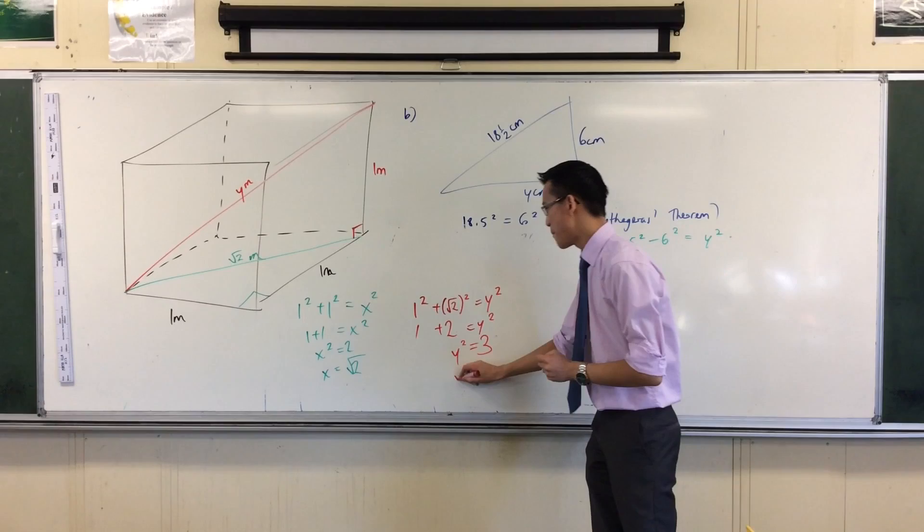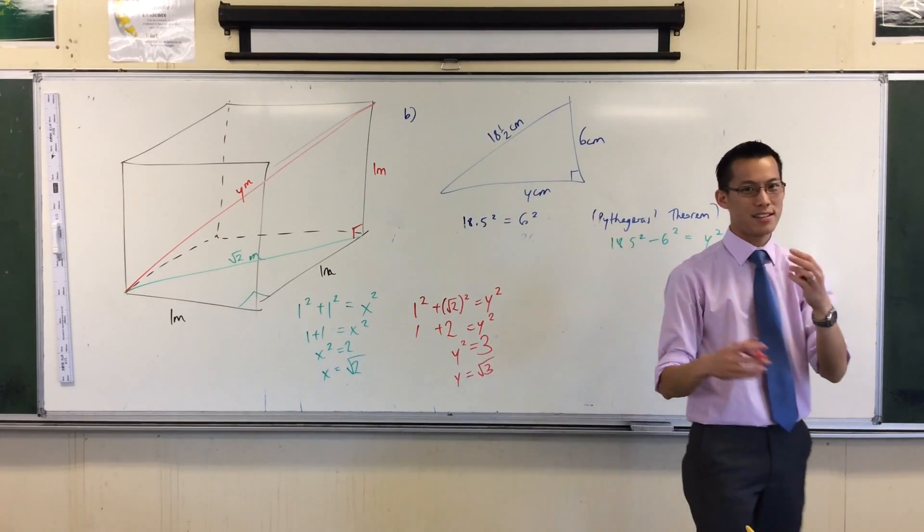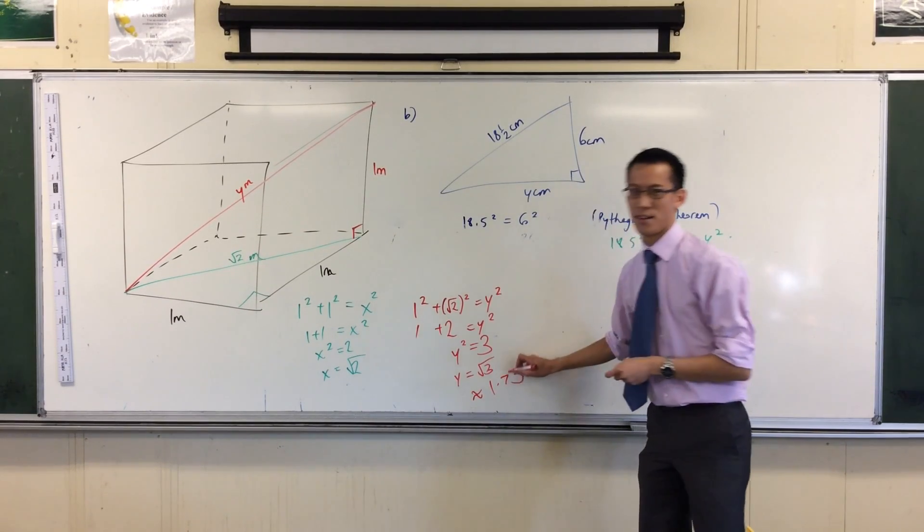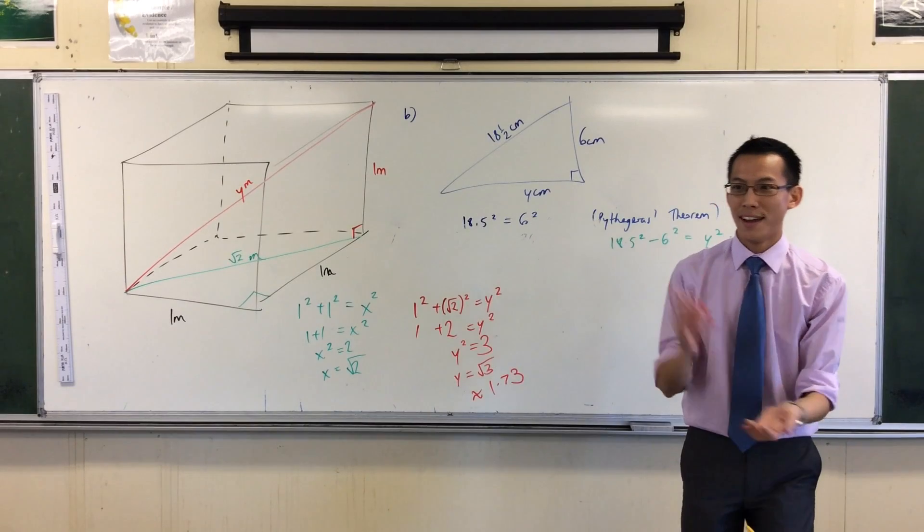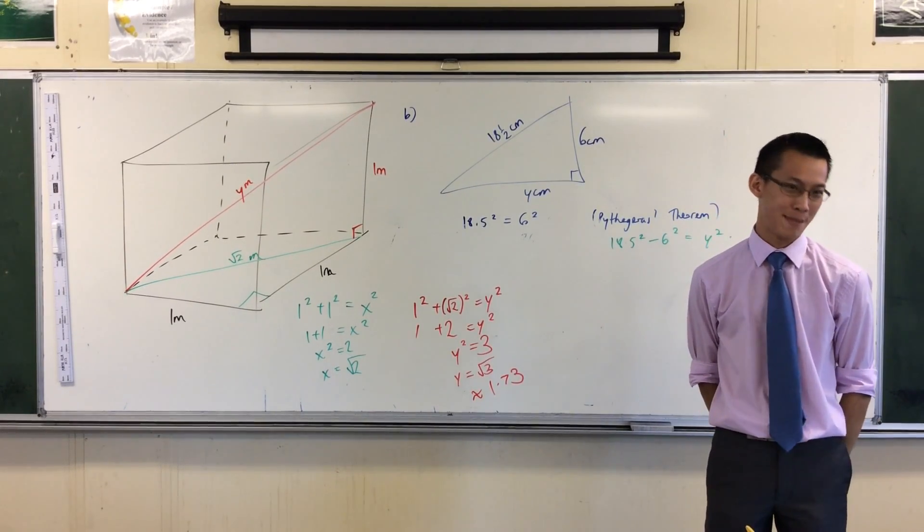That means y, that long red line over there, is the square root of three, which if my memory serves me right is about 1.73. And bam, there goes my fishing rod with a whole three centimeters to spare.